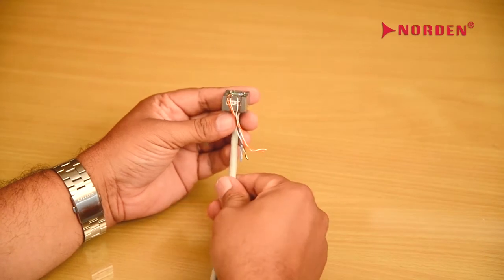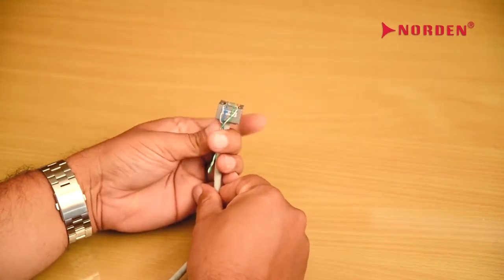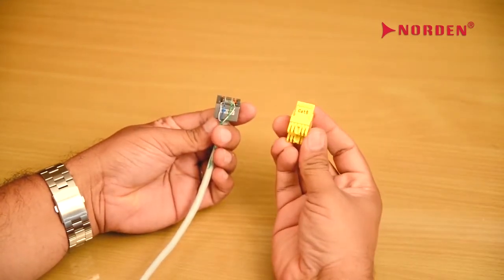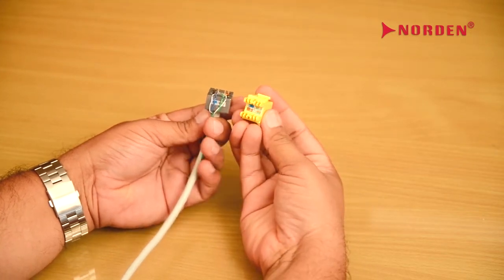Now we can insert the CAT6 keystone jack inside the fixture. Check the color code and insert the keystone like this.